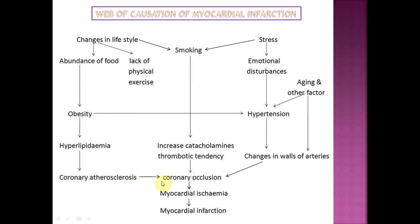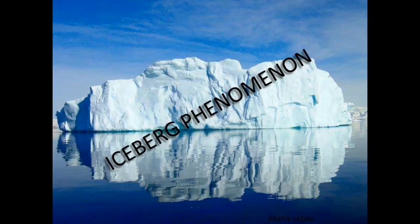All these factors are interrelated — we cannot place them into a triangular shape. It is like a web of interrelated factors causing the disease. This is what is followed today for chronic and lifestyle diseases, rather than the simpler multifactorial model. The web of causation is similar to multifactorial causation but with more specific interrelationships.